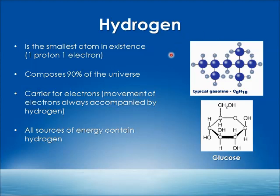Gasoline, which is a fuel source for our car engines, contains 18 hydrogens. Glucose contains 12 hydrogens — glucose is the fuel for our cells. So the more hydrogen something has, relatively, you can tell how much energy that thing has.